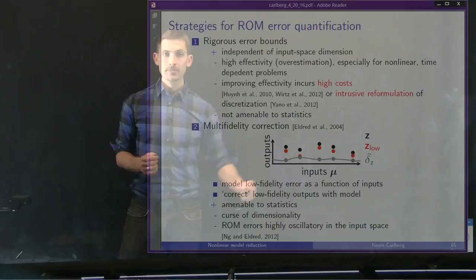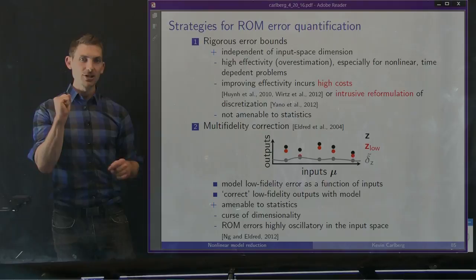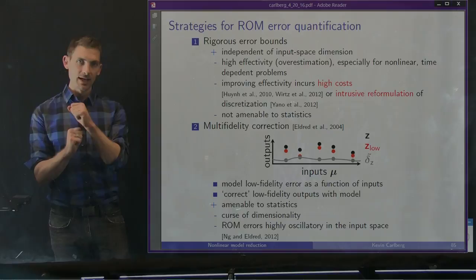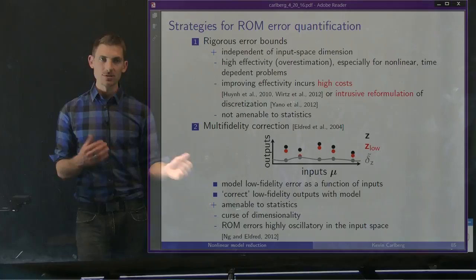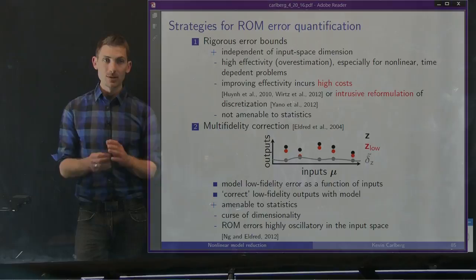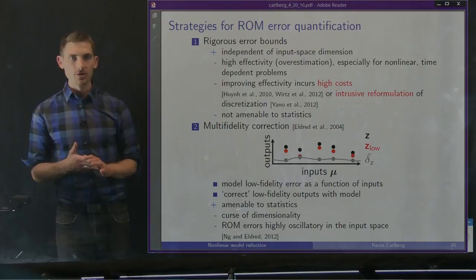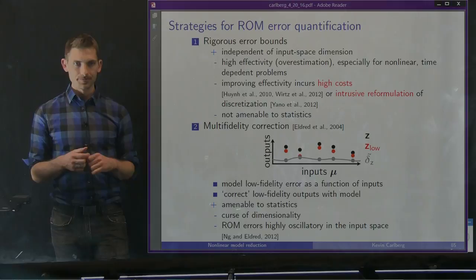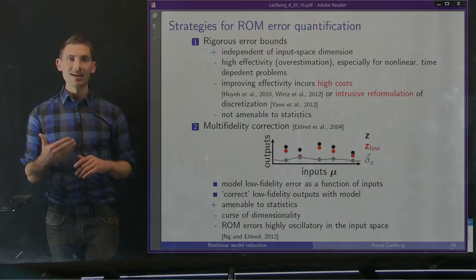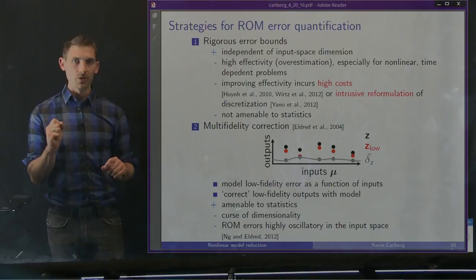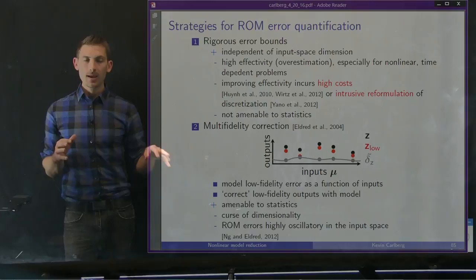This yields a model of the ROM error as a function of the inputs, and when we use the ROM for prediction, we can correct it with this function to generate a hopefully better prediction of the actual output quantity of interest. This is amenable to statistics if we use a Gaussian or stochastic process. But it suffers from the curse of dimensionality because we have to build a model of the error in the entire input space — imagine 10 or 100 input parameters. Furthermore, the ROM errors tend to be highly oscillatory in the input space, nearly zero at training points and growing quickly away from them.